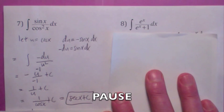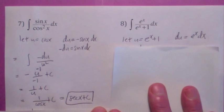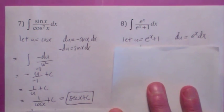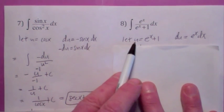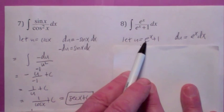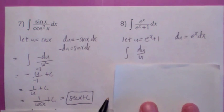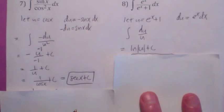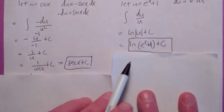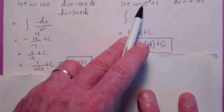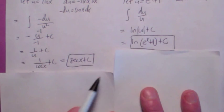Are you going to let u equal e to the x, or u equal e to the x plus 1? I think u equal e to the x plus 1. How do you know what to do? Just try something; if it doesn't work, try something else, but don't give up. This works because du is the derivative of u with respect to x, which is e to the x times dx — and there's what you have on top. So this becomes du over u, which is the natural log of the absolute value of u plus c. But u equals e to the x plus 1, and since e to the x plus 1 is always positive, you can drop the absolute values. There's your answer.